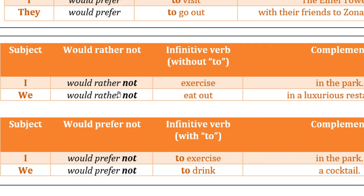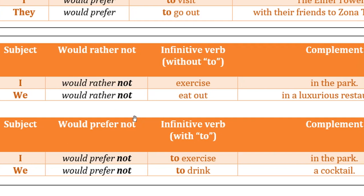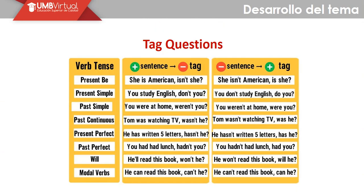Para hacer negaciones con 'would rather', simplemente agregamos 'not' después de 'rather'. Ejemplos: 'I would rather not exercise in the park' — preferiría no ejercitarme en el parque; 'We would rather not eat out in a luxurious restaurant' — preferiríamos no comer por fuera en un restaurante lujoso. Con 'would prefer' es lo mismo pero respetando la partícula 'to': 'I would prefer not to exercise in the park'; 'We would prefer not to drink a cocktail'.